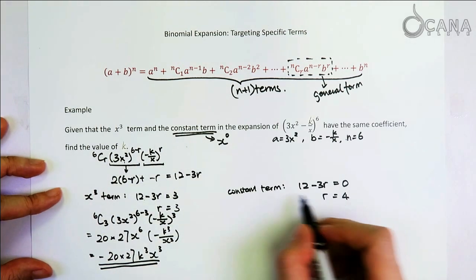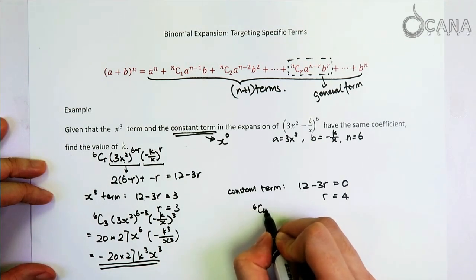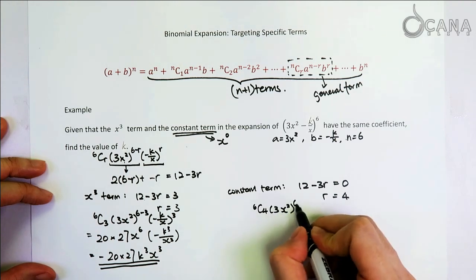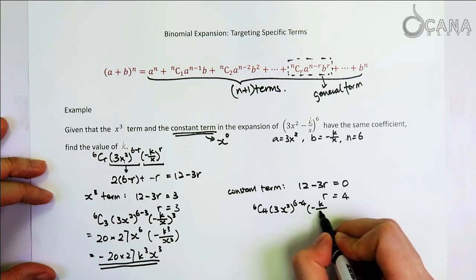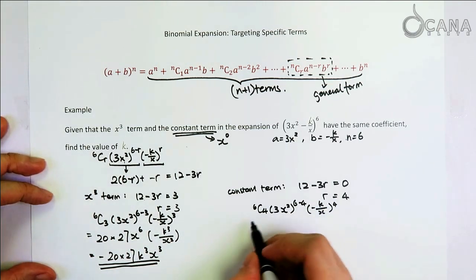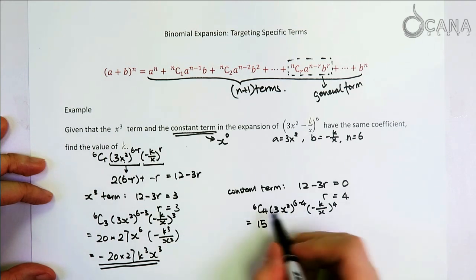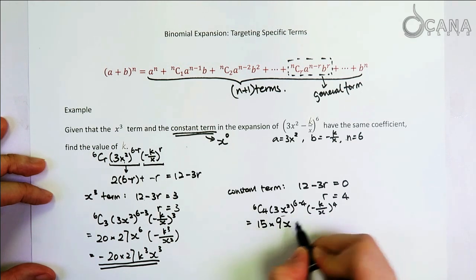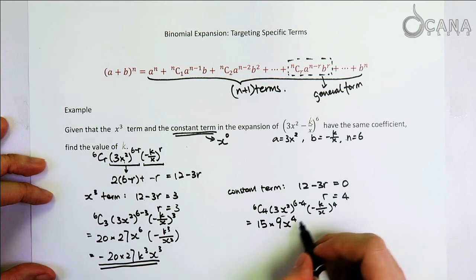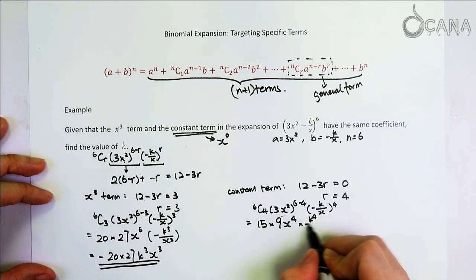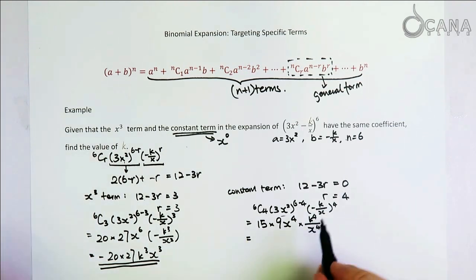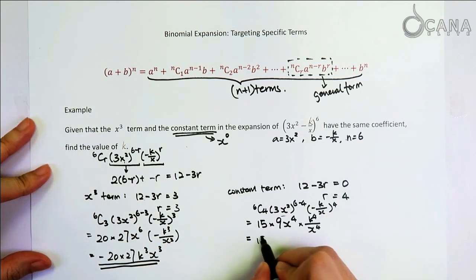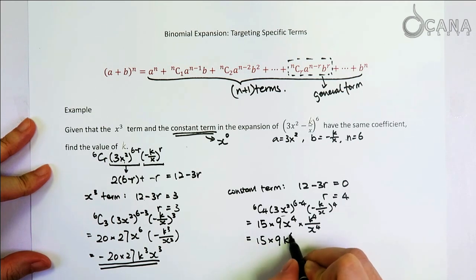So then we can just substitute r equals to 4 in this formula here. It's 6 choose 4, 3x squared, 6 minus 4, negative k over x to the power of 4. So let's continue to simplify this a little bit more. 6 choose 4 gives 15. And this bracket here gives us 9x to the power of 4. And within this bracket, it gives k to the power of 4, x to the power of 4. Let's tidy up a little bit more to get 15 times 9 times k to the power of 4, because these guys are cancelled. So this is the constant term.